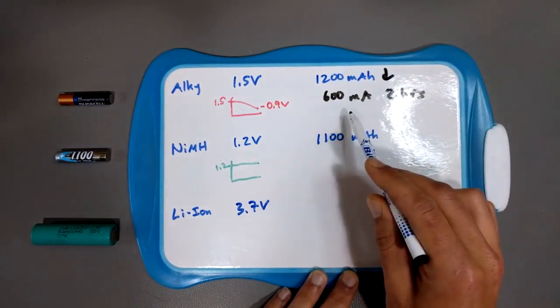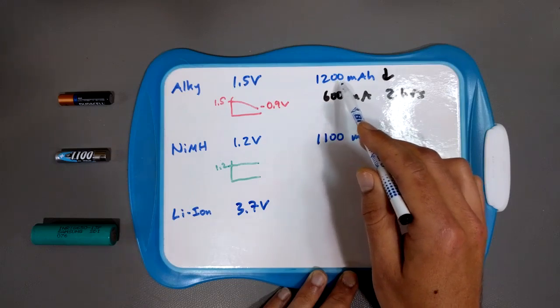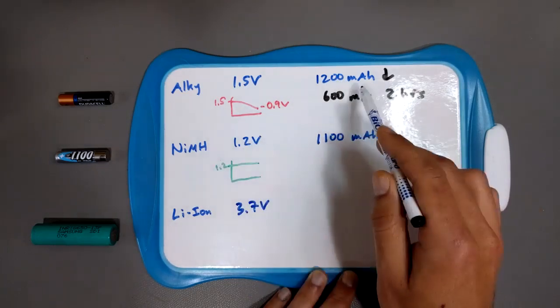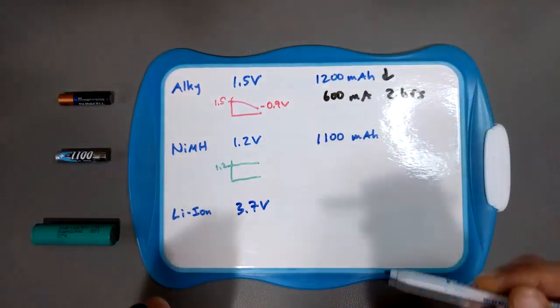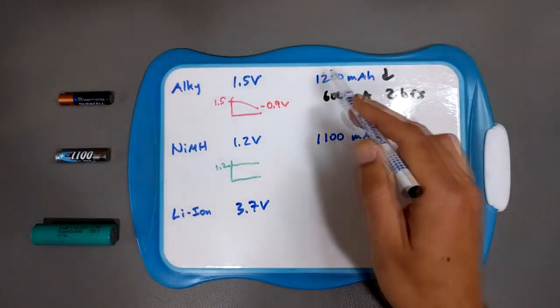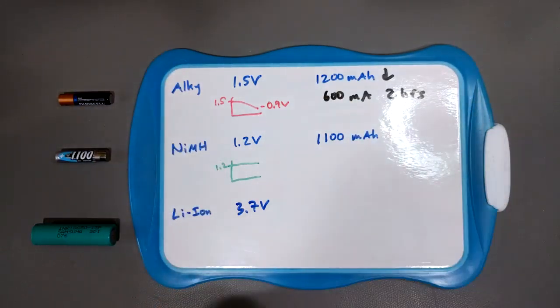You can, but the problem is that the more current you try to pull from the alkaline battery, the smaller this actual overall capacity becomes. That's kind of confusing. What does that actually mean? Well, basically, you've got a 1,200 milliamp hour battery here. You try to pull 600 milliamps. You'd think that because if you're pulling 600 milliamps and it's 1,200 milliamp hours, you should be able to pull 600 milliamps for two hours. But you can't.